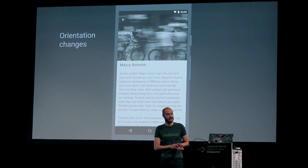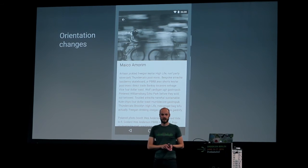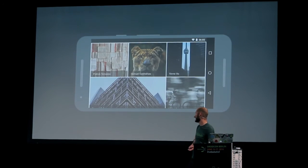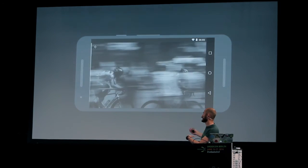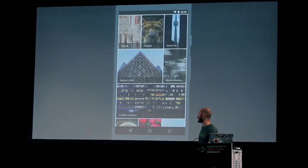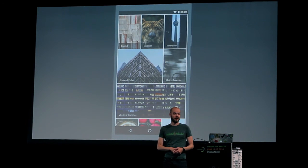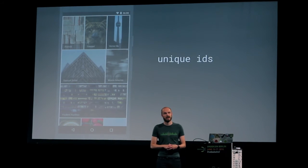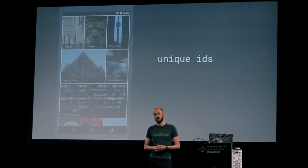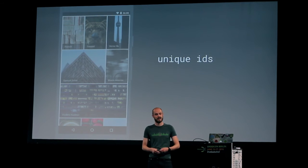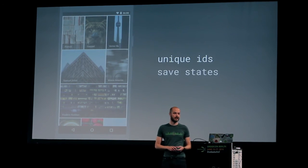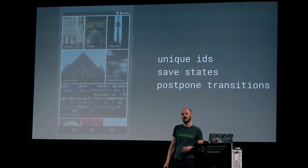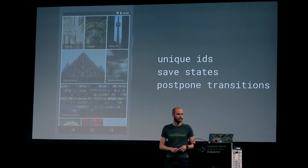Let's get into a little bit more complex things. Orientation changes are a fun thing if you handle them correctly. When it comes to transitions, you can do transitions like that — coming back from the initial activity and transitioning back after changing orientation — which is a little bit more work because you have to think about what you share and how you share it. In order to do this, there are a couple of small things you need to do. You have to have IDs that are unique for each view within the hierarchy, because otherwise the system will go through the layout hierarchy, find the first view with that ID, and try to map that. You also have to save states during orientation changes and postpone transitions.